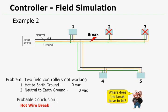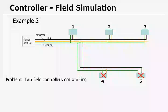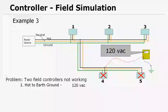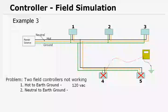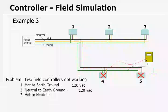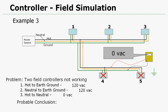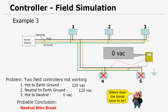Example three. Two field controllers are not working, but it's a different two in this example. It's controllers four and five. We do the same tests. Hot to earth ground, find that we have 120 volts AC at the first controller that's not working. Second reading, neutral to earth ground. And we find that there also we have 120 volts AC. So again, neutral to earth ground, we should have a reading of 0 to 5 volts, nothing more. So from what we've already learned, we already know we have a break in the neutral wire. Hot to neutral reading though, we get a zero reading. So probable conclusion is we have a neutral wire break. Now where does the break have to be? Well, we know it has to be between the last controllers that are working and the first controller that isn't working.